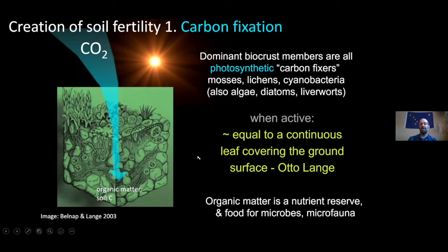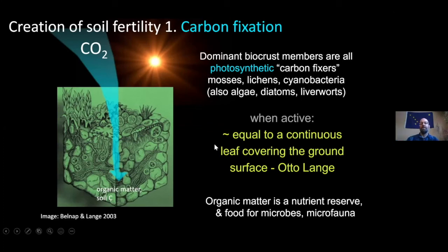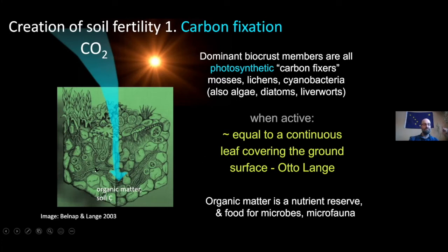This activity has been described by some as if you were to drape a giant leaf over the soil surface — when they're turned on, that's about the flux you can observe. This is important because organic matter is a nutrient reserve — it has nutrients that stick to it and nutrients within it. Furthermore, that carbon is food for microbes and lots of small animals that live in the soil as well.